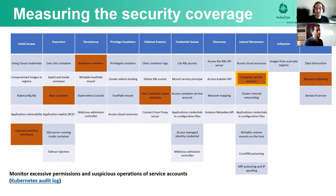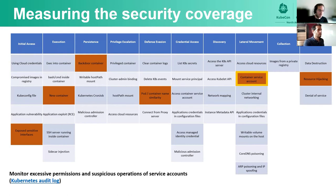For container service accounts, we should monitor suspicious operations of service accounts. This can be done by using the Kubernetes audit log — also called kubeaudit by some. This is a very powerful tool that gives you great visibility into what happens in the Kubernetes control plane. You can see basically all the operations in the cluster: who did it, when it happened, from which IP, and more — very useful when you want to monitor activity in the cluster.